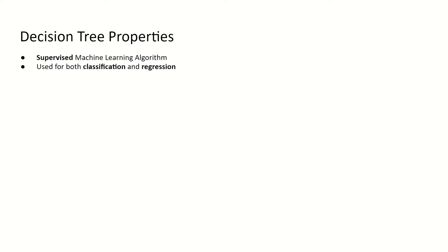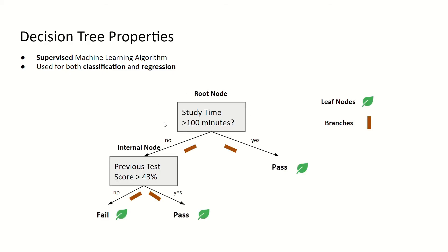So what are some properties of a decision tree? They are a supervised machine learning algorithm — that is, they map input data onto output data. They are used for both classification and regression. The first decision in a decision tree is known as the root node. Any decisions after the root node that exist within the tree are known as internal nodes. Answers to the decisions, such as yes or no, are known as branches, and the final outputs of a decision tree are known as the leaf nodes.